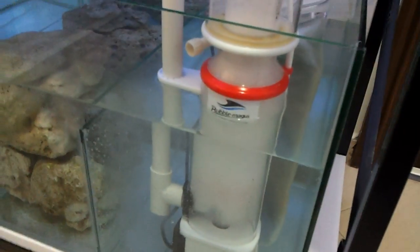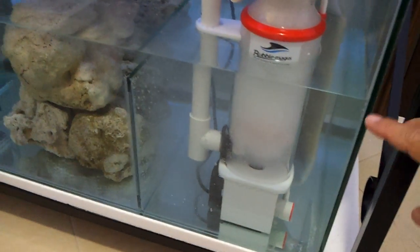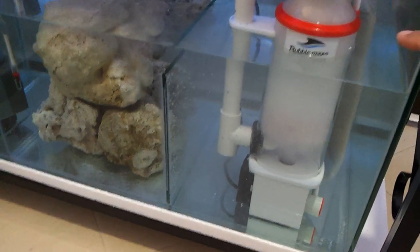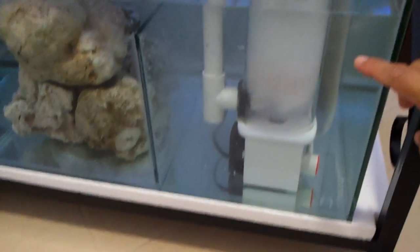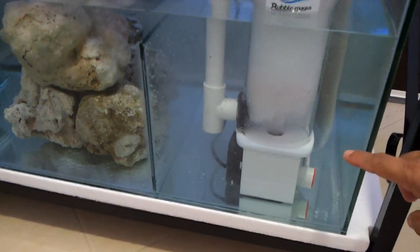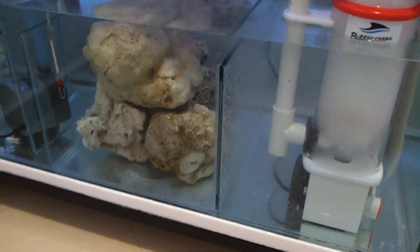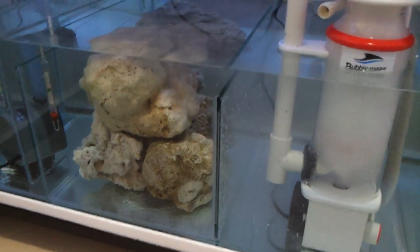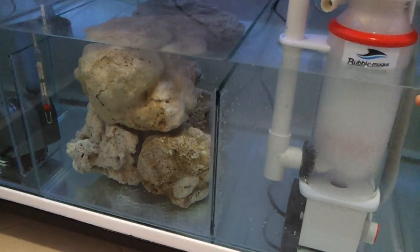And one thing I'm going to mention here, this skimmer's working range is actually between eight to ten inches of water. So as you can see here, I have roughly about 9.5 inches of water at the water level.